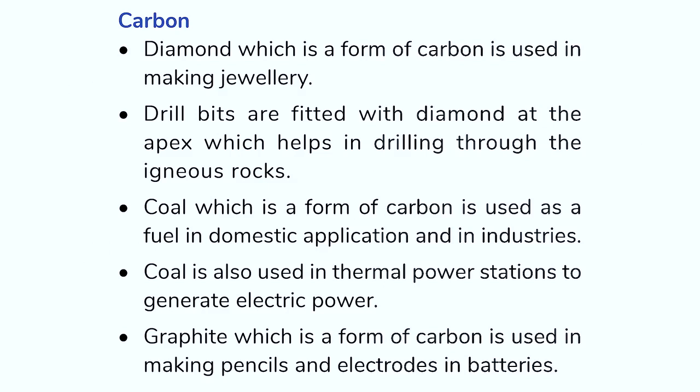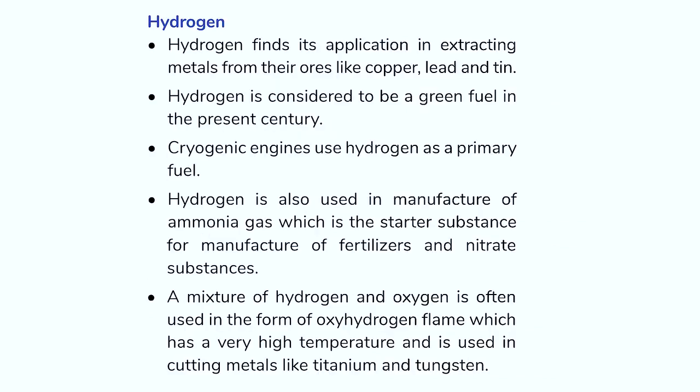Carbon. Diamond, which is a form of carbon, is used in making jewelry. Drill bits are fitted with diamond at the apex, which helps in drilling through the igneous rocks. Coal, which is a form of carbon, is used as a fuel in domestic application and in industries. Coal is also used in thermal power stations to generate electric power. Graphite, which is a form of carbon, is used in making pencils and electrodes in batteries.